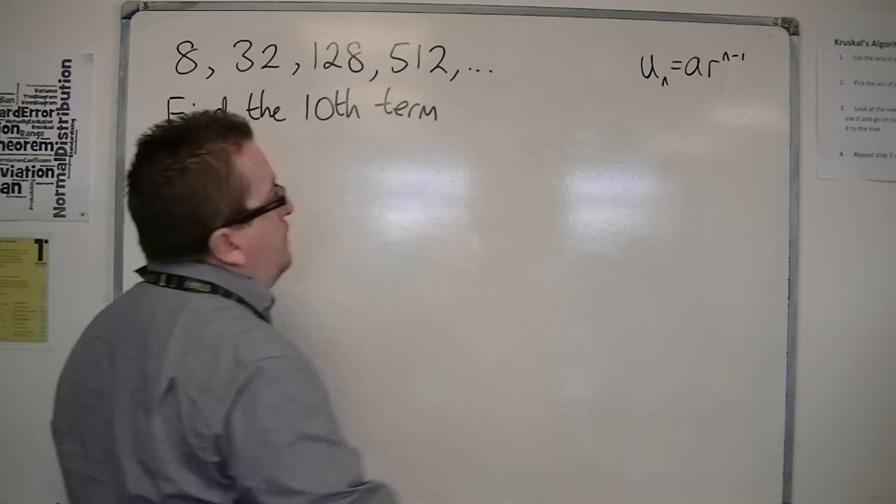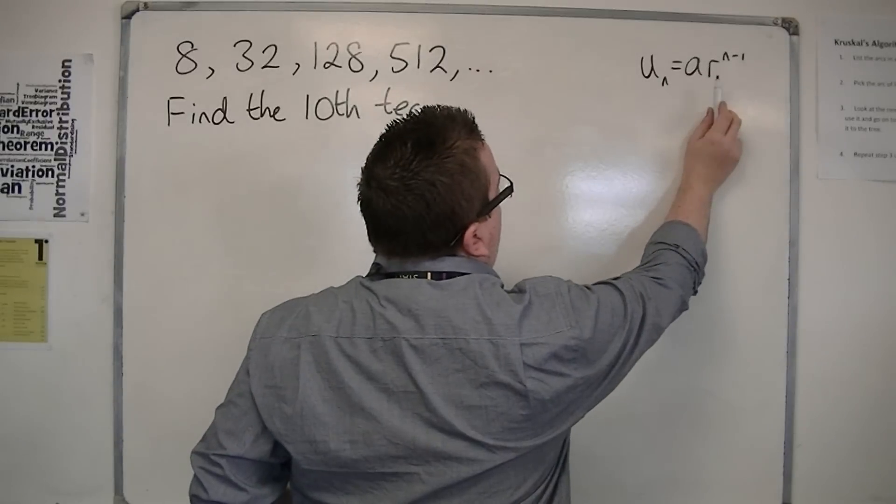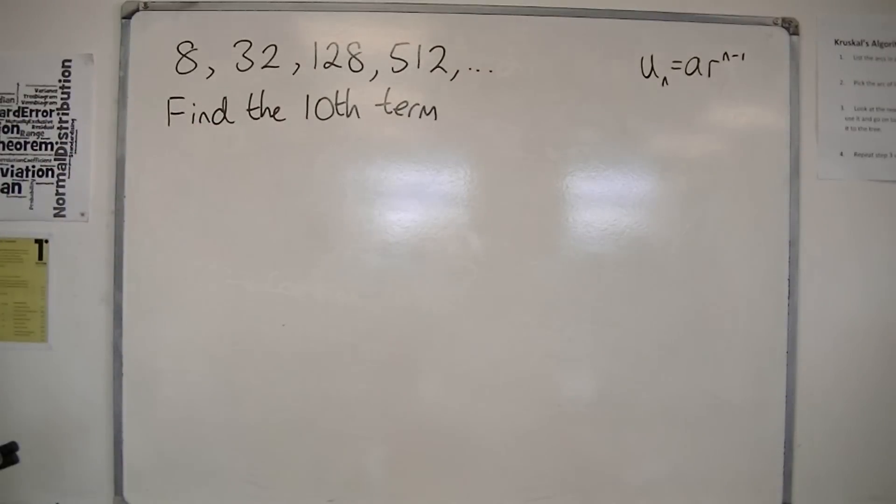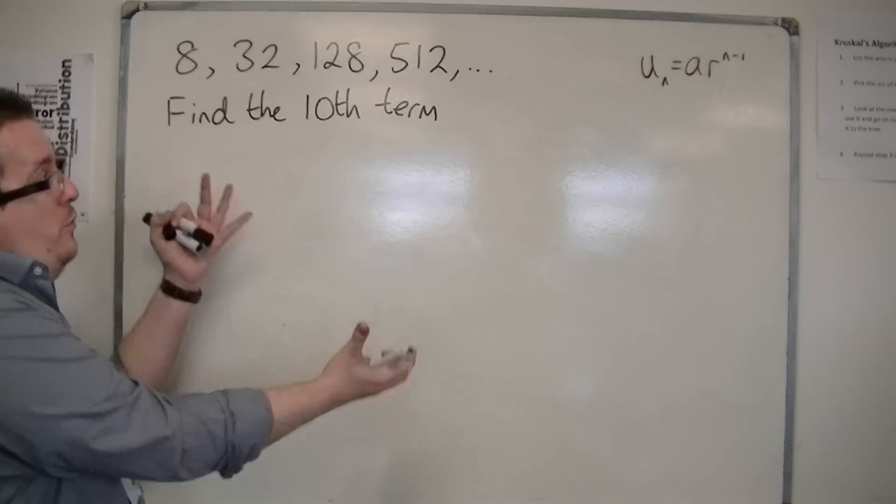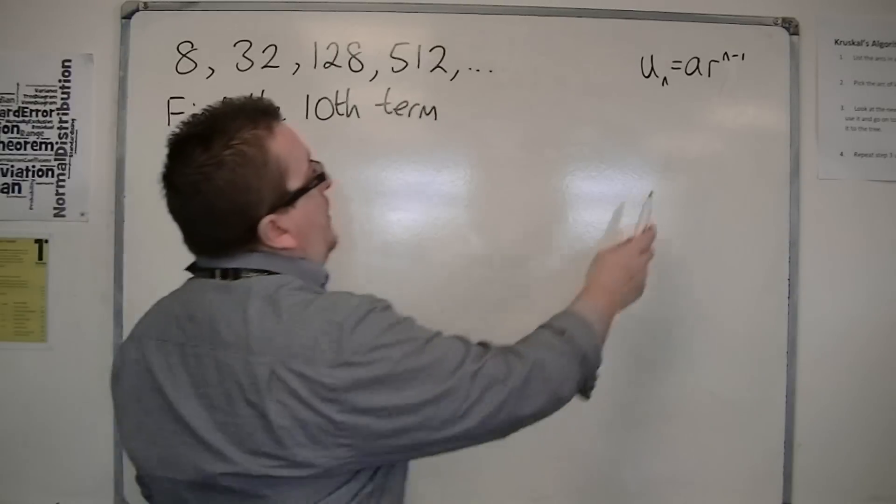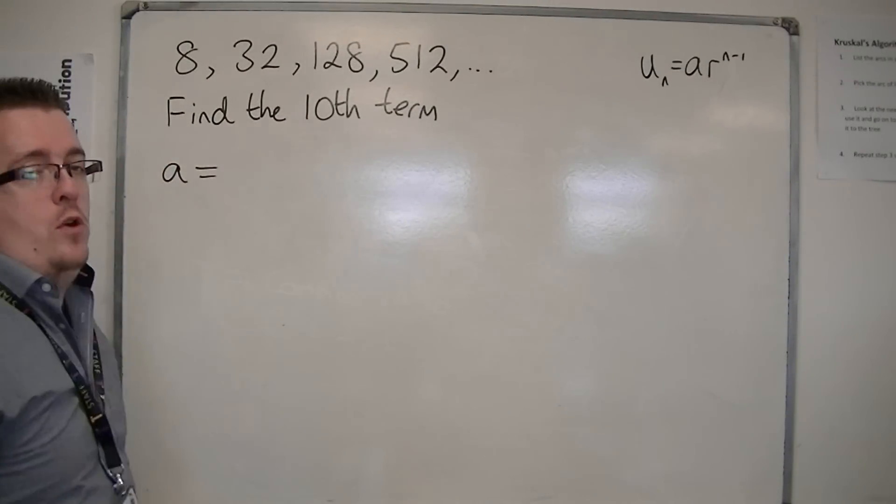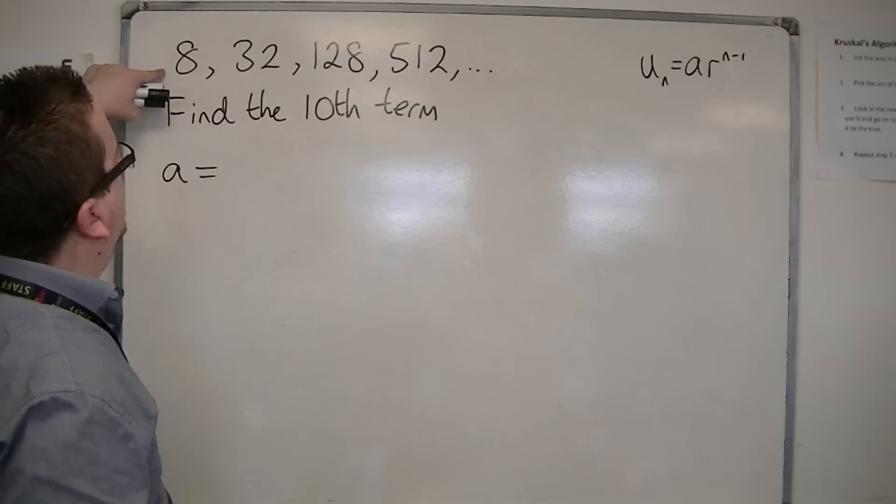What we need is the a and the r. Everything else will do the rest for us. So we need a and r. Now, the first term is very easy to pinpoint because it's the first number in the sequence, 8.